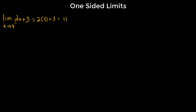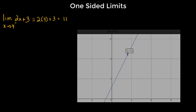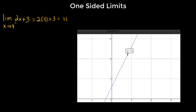Let's take a look at the graph of 2x + 3. We can clearly see continuity at x = 4. All of these values exist, so approaching from the left we still get 11.